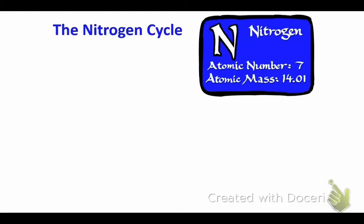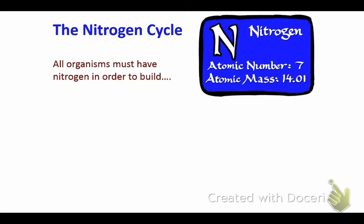We will be talking about the nitrogen cycle today, which obviously plays an important role in the farming community. Nitrogen, as you can see right there, is very important. It is atomic number seven on the periodic table. You will be talking about this lots in your chemistry class next year.